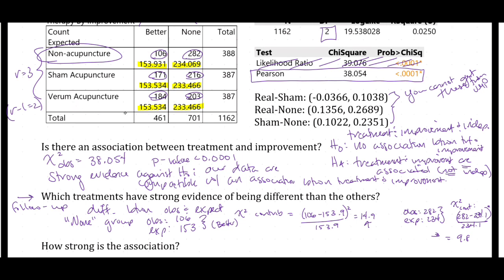The real acupuncture versus no treatment shows a pretty big effect: the proportion who got better under real acupuncture is much higher than under non-acupuncture intervention. Similarly, those who received sham acupuncture improved at a much higher rate than those who received no acupuncture. The lower bound for real versus none is 13.5%, and the lower bound for sham versus none is 10.2%, supporting a very large effect in both cases.